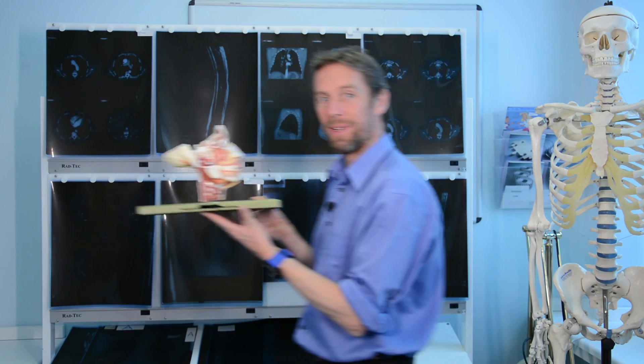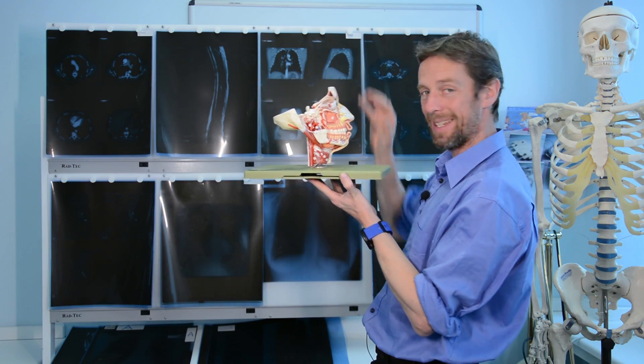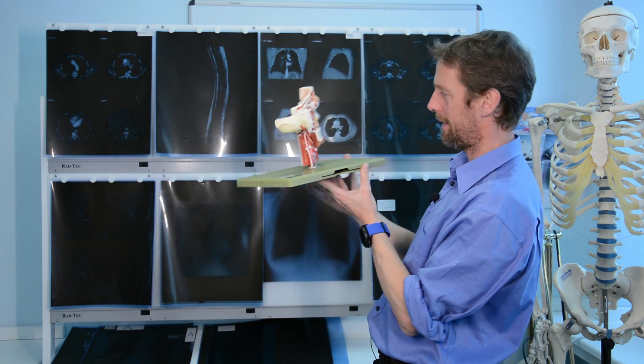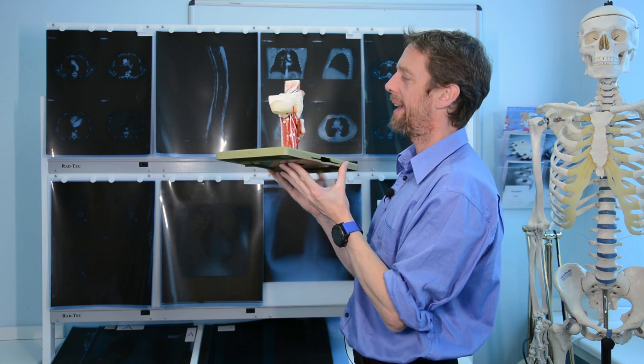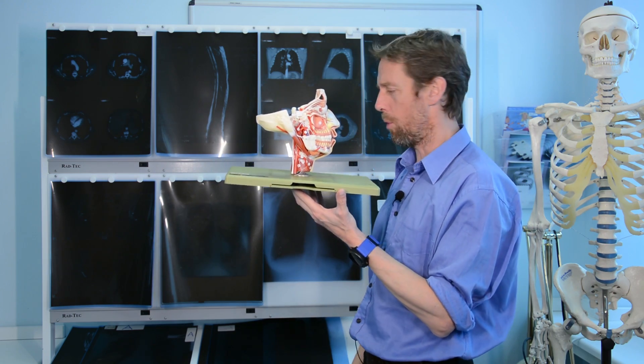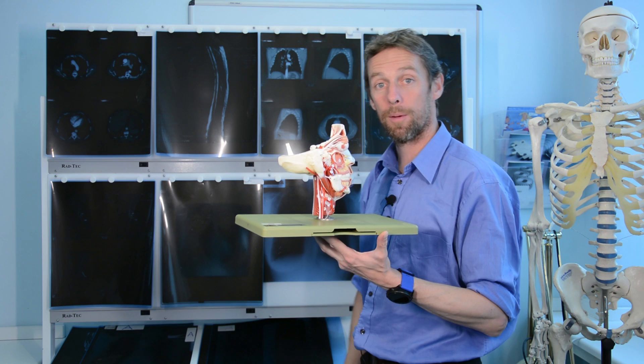So that covers the superficial arteries of the face and some relevant pathology. We'll have a look at the veins and the deep vessels next — the deep vessels are a little more abstract and complicated, but we'll get to those.